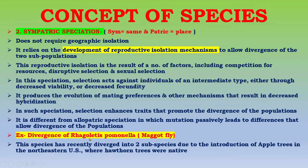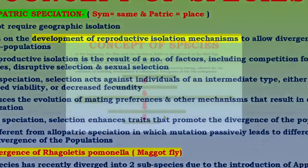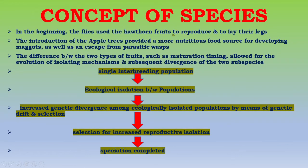An example is the divergence of Rhagoletis pomonella, a maggot fly that has recently diverged into two sub-species due to the introduction of apple trees in the northeast United States, where hawthorn trees were native. Originally the flies used hawthorn fruits to reproduce and lay their eggs. The introduction of apple trees provided a more nutritious food source for developing maggots as well as an escape from parasitic wasps. The differences between the two fruit types, such as maturation timing, allowed for the evolution of isolating mechanisms and subsequent divergence of the two sub-species.